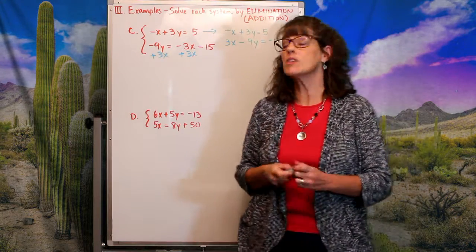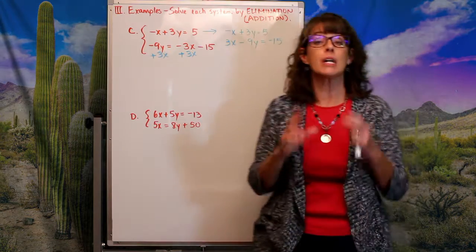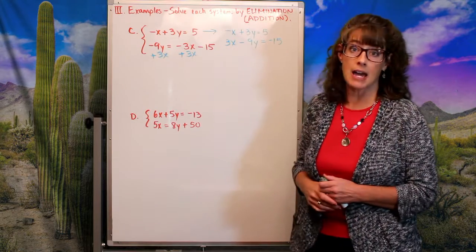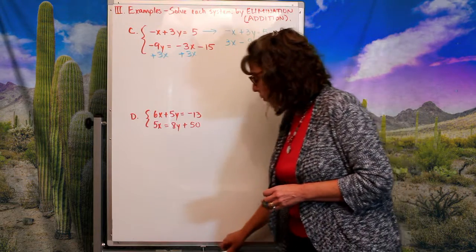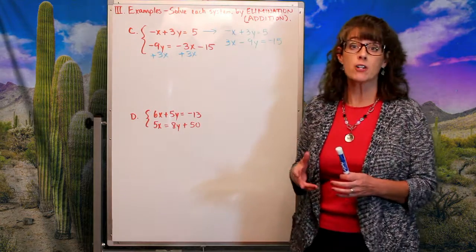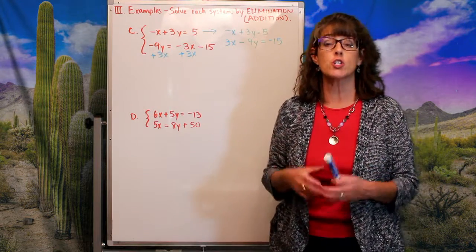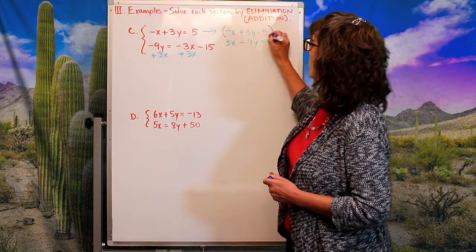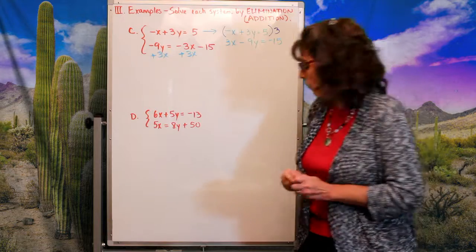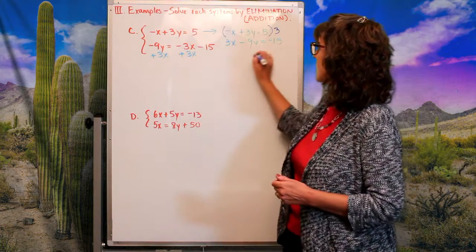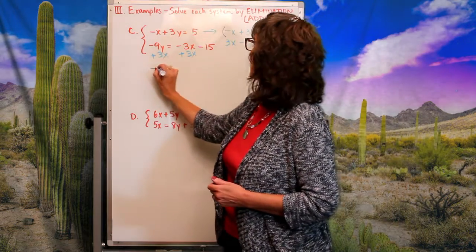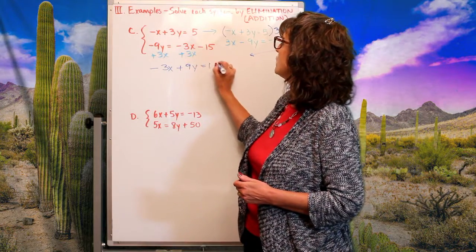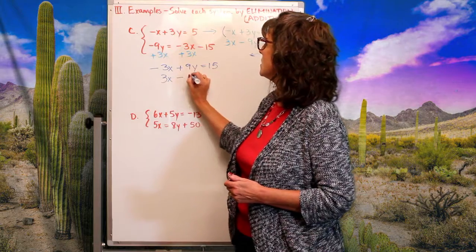I'm ready to add them, but remember — this is the method of elimination, so I need to eliminate a set of variables. Nothing will cancel as written, so I'll multiply the top equation by 3. That gives me −3x + 9y = 15, and I carry the bottom equation down unchanged.